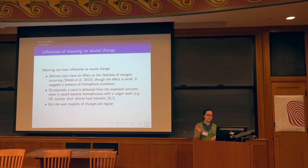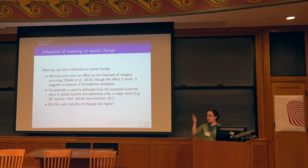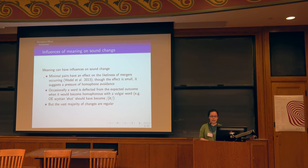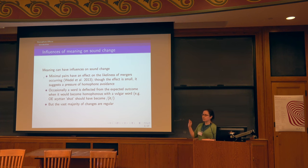Much more rarely, a particular word is deflected from its expected outcome — not a regular change — when it would have become homophonous with a vulgar word. The classic example in English is the Old English word 'shitan,' which became 'shut.' That vowel should have turned out as an 'i' in modern English, but that's already a vulgar word. So it seems to have been deflected from what regular sound change should have produced — but this is really unusual and basically only happens with swear words.